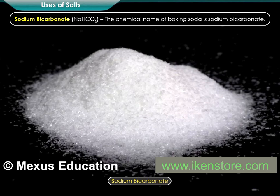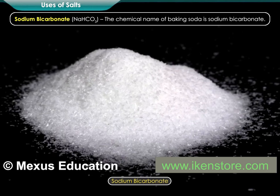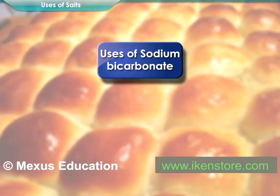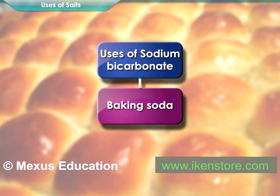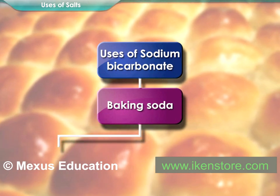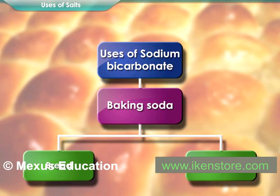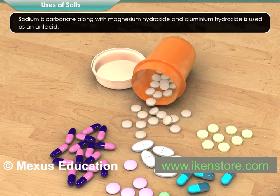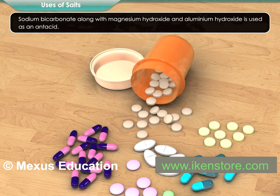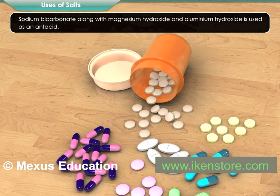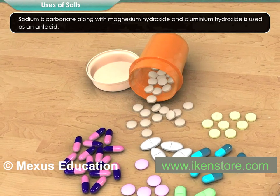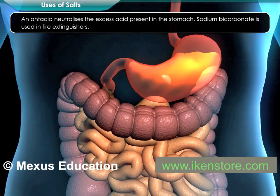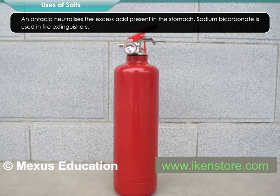Sodium bicarbonate. The chemical name of baking soda is sodium bicarbonate. It is used in the manufacture of baking powder, which is used in making bread and buns. Sodium bicarbonate, along with magnesium hydroxide and aluminium hydroxide, is used as an antacid. An antacid neutralizes the excess acid present in the stomach. Sodium bicarbonate is also used in fire extinguishers.